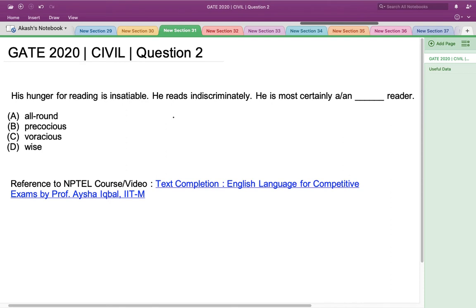Hello everyone, this is the question asked in GATE 2020 Civil Engineering Set 1. We have been given an English sentence and we have to fill in the missing word: 'His hunger for reading is insatiable. He reads indiscriminately. He is most certainly a dash reader.' To answer such questions we need to have a good vocabulary of different words and what they mean.